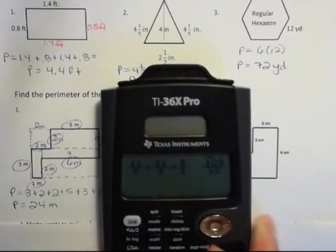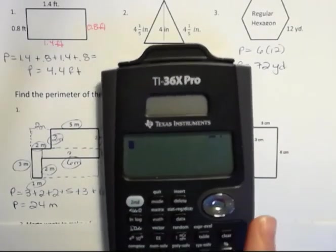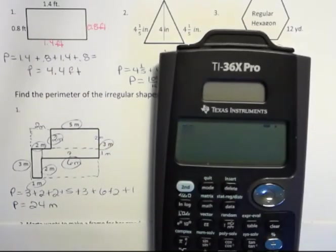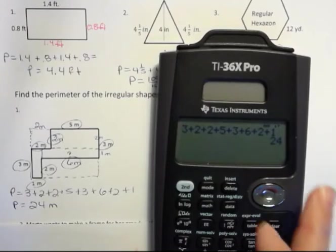And of course, if you feel like maybe you made a mistake in adding, or maybe I made a mistake in adding, I don't really want to go on without checking that. So I'll just check it really quick. 3 + 2 + 2 + 5 + 3 + 6 + 2 + 1 is 24. Okay.